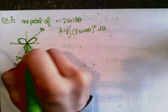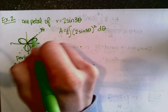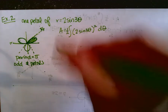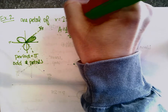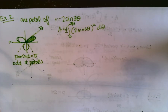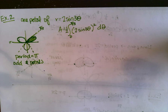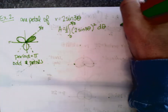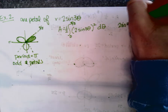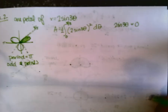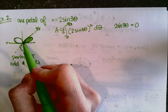But if you have no idea what the graph looks like or where the petals are, another way is to take two sine three theta and set it equal to zero, then find the zeros — because the petal starts and stops at zero.